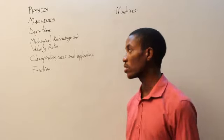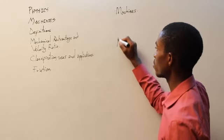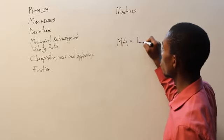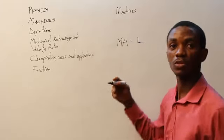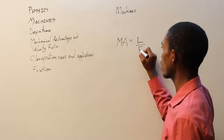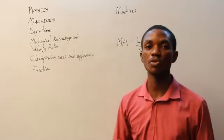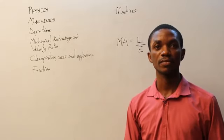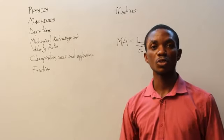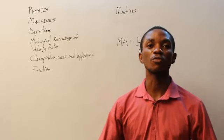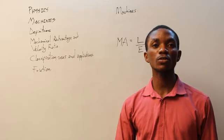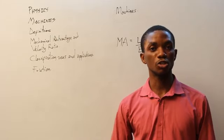Mechanical advantage, simply put, is the ratio of the load against the effort. That is, mechanical advantage represented by MA equals the load — that is the force of the load you want to carry — divided by the effort, the force you apply. That is mechanical advantage. And there is another entity called the velocity ratio.